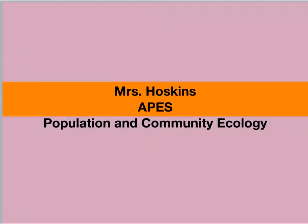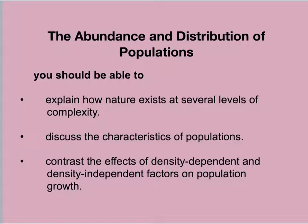Hello friends and welcome to another online video of Ms. Hoskins AP Environmental Science. This section is on population and community ecology — specifically the abundance and distribution of populations. By the end of this video, you should be able to explain how nature exists at several levels of complexity, discuss the characteristics of populations, and account for the effects of density-dependent and density-independent factors on population growth.